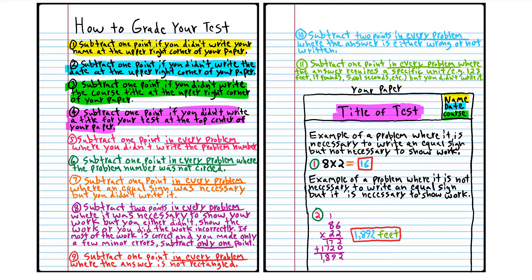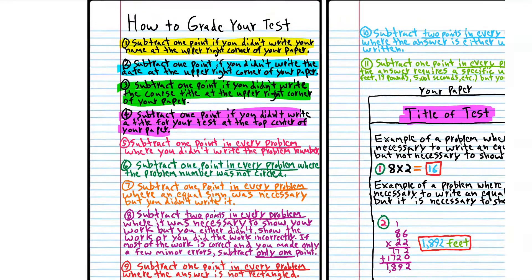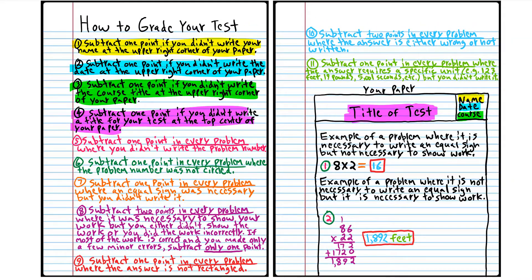All right, we're back. So, if you got a 90 to 100, that means you know the material really well. If you got 80 to 89, that means you know the material well, but you have some minor issues to work on.